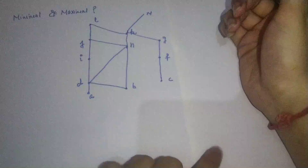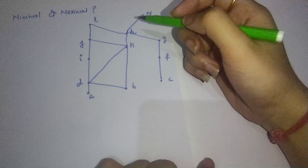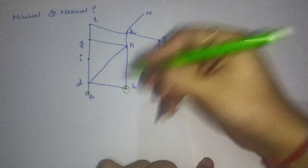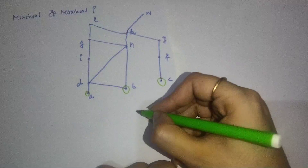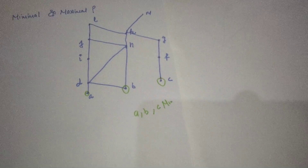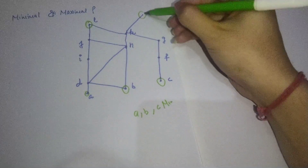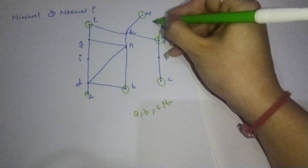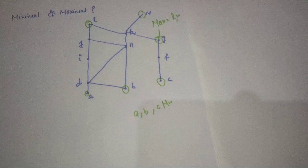Now if we see both the maximal and minimal elements together: for minimal elements, at the base, A has no relation, B has no relation, and C has no relation — so A, B, and C are your minimal elements. For maximal elements at the top, G has no relation ahead, but there is no relation to G, so it will not be the maximal element. The maximal elements here are L and M. I hope the things are clear to you — maximal and minimal elements are now clear.